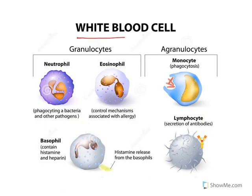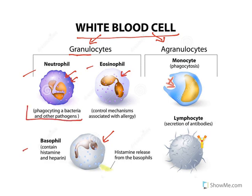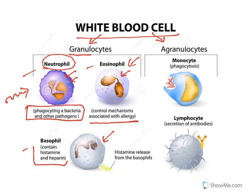White blood cells are classified as granulocytes and agranulocytes. Granulocytes have visible granules: neutrophils, eosinophils, and basophils. Neutrophils are phagocytes — they phagocytose bacteria and other pathogens and are the immediate mediators. Eosinophils control mechanisms associated with allergy. Basophils contain histamine and heparin. The naming reflects their chemical nature: basophils have basic molecules, eosinophils have acidic molecules, and neutrophils are neutral.